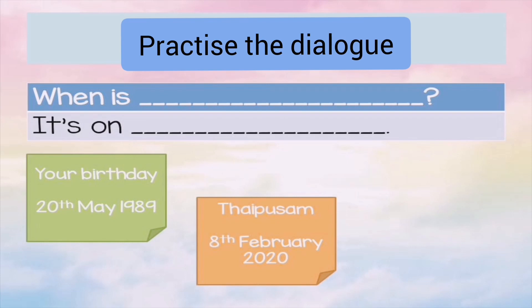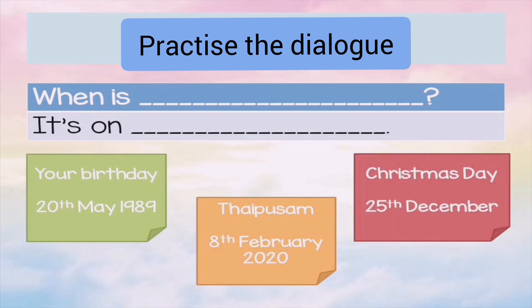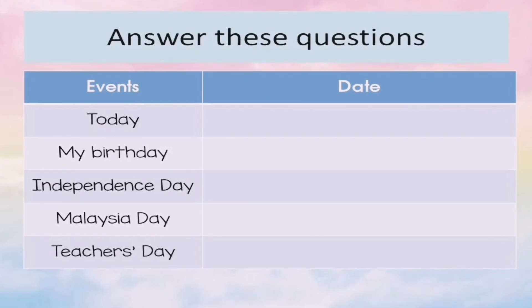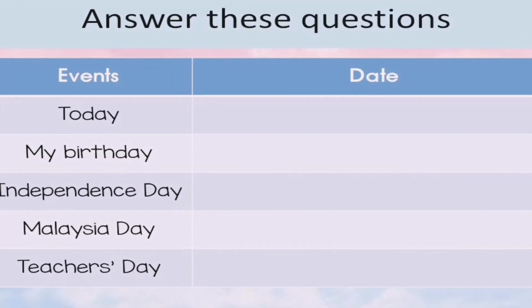The answer is 'It's on 8th February 2020.' The wrong answer would be 'It's on 8 February 2020' — why? Because the date should be in ordinal form. Last one: 'When is Christmas Day?' It's on '25th December.' It's never '25 December.'